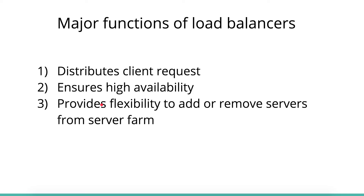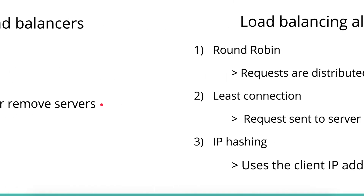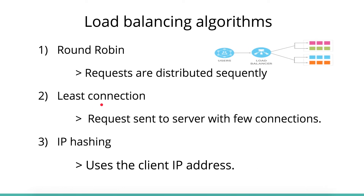Now let's talk about load balancing algorithms. There are three important ones. The first is round robin: requests are distributed sequentially. With two backend servers, the first request goes to server one, the second to server two, the third back to server one, the fourth to server two, and so on — the sequence keeps rotating.